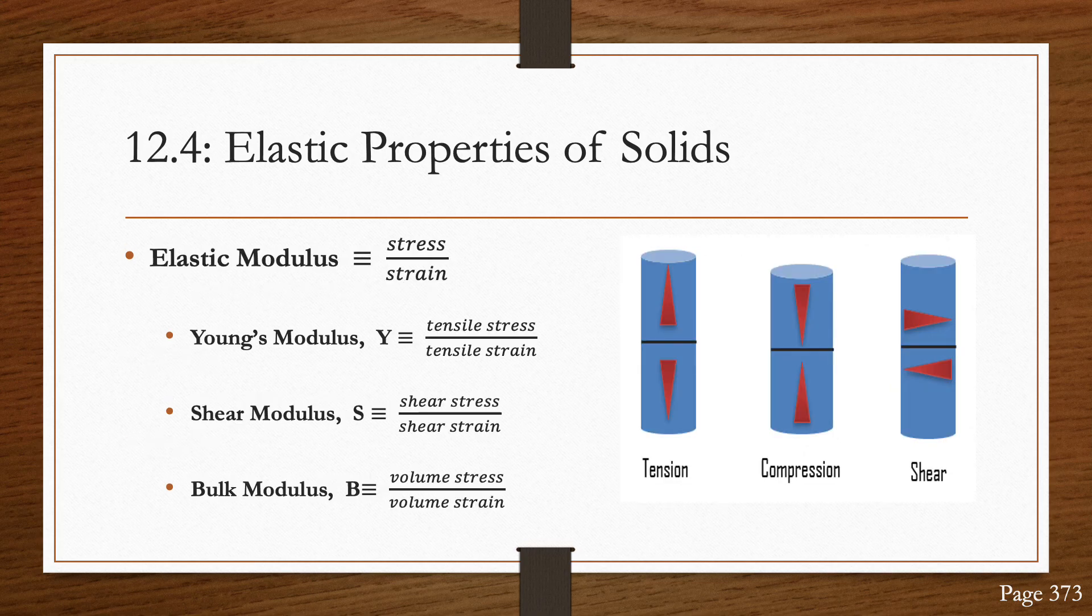Stress is proportional to strain, where the constant of proportionality depends on the material being deformed, as well as on the nature of the deformation. This proportionality constant is called the elastic modulus, which is a ratio of the stress to the resulting strain.